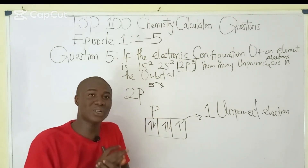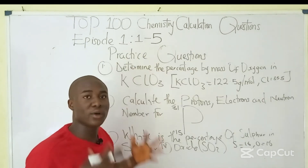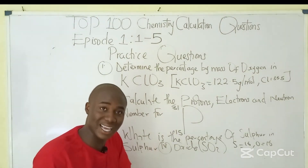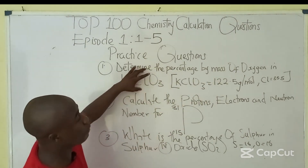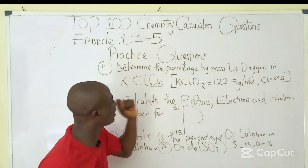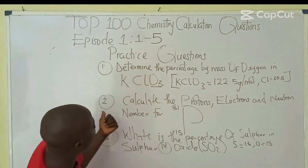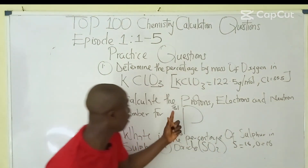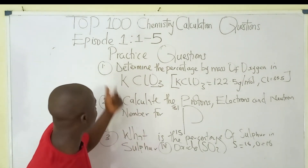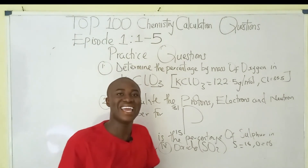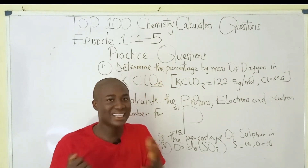If you find this video helpful, do click the subscribe button and share these videos with your friends. Here are some practice questions: Question 1 — determine the percentage by mass of oxygen in the given compound (note there are 3 atoms of oxygen). Question 2 — calculate the protons, electrons, and neutrons for a phosphorus atom with mass number 31 and atomic number 15. Solve them and provide your answers in the comment section below. Thank you very much and God bless you.